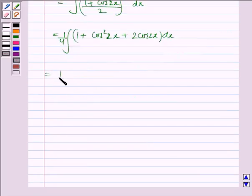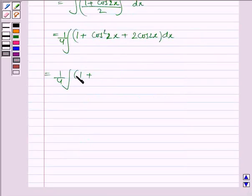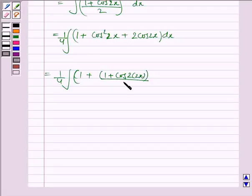This equals 1/4 times the integral of: 1 plus—we'll use the same formula again—so this becomes 1 plus (1 + cos4x)/2 plus 2cos2x, dx.